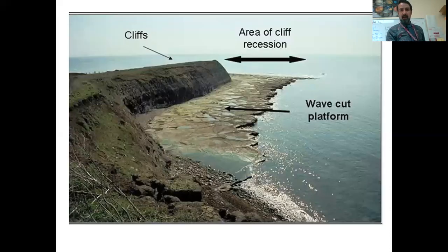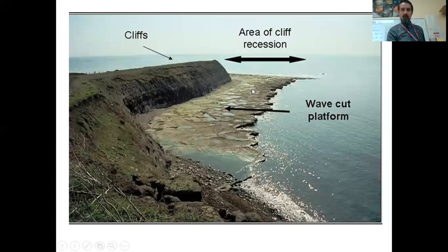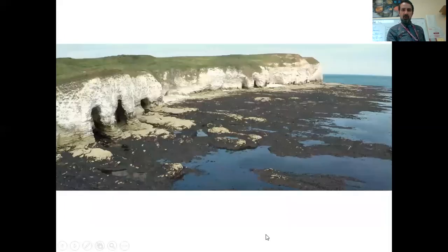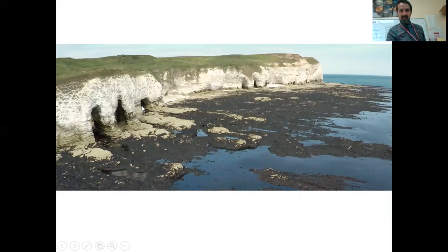Some examples of wave cut platforms here. You can see we have our cliffs, the area of recession, and then this at low water mark or low tide is the wave cut platform. Another great example is here. You can see we're beginning to get features like caves where you can see erosion has happened.